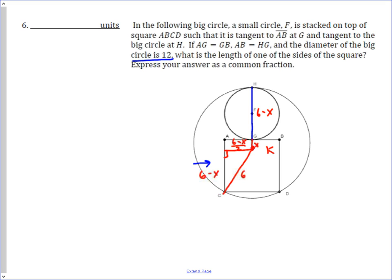And then this length right here is x, which means this length right here is 6 minus x, and then minus x again, because 6 minus x is the length of the side of the square, and then you subtract away that little x piece and you get 6 minus 2x.